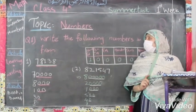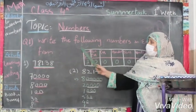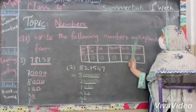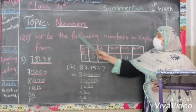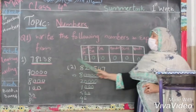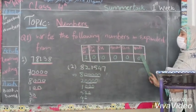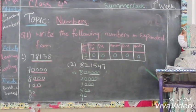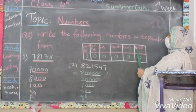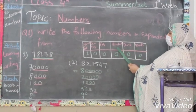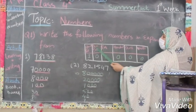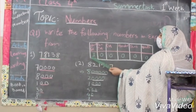In numbers we have two questions. Question number one is: write the following numbers in expanded form. But before this, you will understand the chart of this expanded form. In that form, for many digits we have units, tens, hundreds, thousands, ten thousands, and hundred thousands.